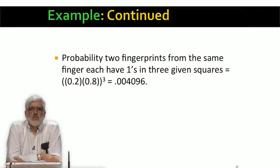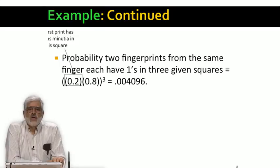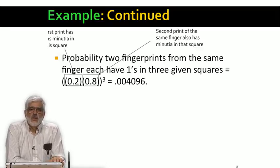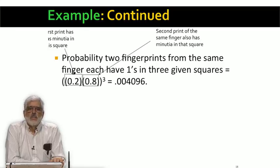Now let's look at two fingerprints that come from the same finger. The probability of both being in a given bucket is much higher, because there is a lot of correlation between the buckets that will contain these prints. For any given grid square, the probability that the first print has a minutiae there is 0.2, and given that it does, the probability that the other does as well is 0.8. We need to raise 0.2 times 0.8 to the third power, because there are three squares each of which need to hold minutiae from both prints. The result is about 4 tenths of 1% — still really tiny, but 64 times larger than the probability if the prints come from different fingers.